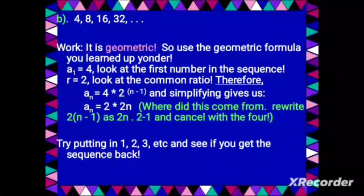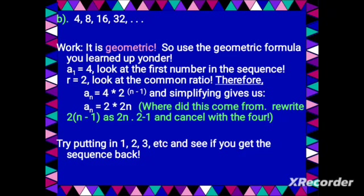For the sequence 4, 8, 16, 32, this is a geometric sequence with a common ratio of 2. To find its nth term, we substitute the values of a and r into the formula a times r raised to (n minus 1). Substituting and simplifying gives 2 times 2 to the power n. You can verify by substituting n equals 1, 2, 3, 4 to recover the original sequence.